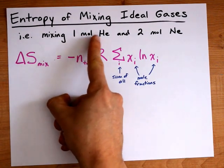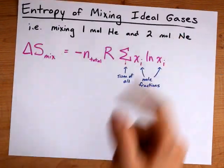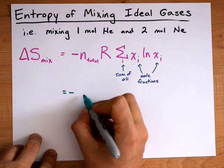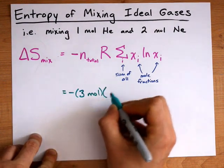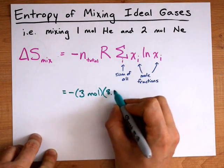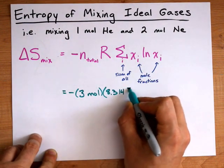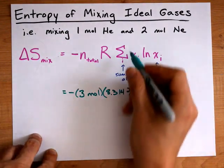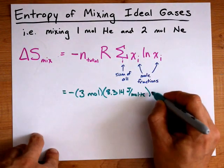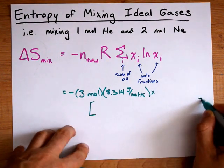Again, we're mixing one mole of helium and two moles of neon. So, the entropy of mixing is negative, that's 3 moles total. R, the gas constant, is 8.314 joules per mole kelvin. And then we get to this sum.